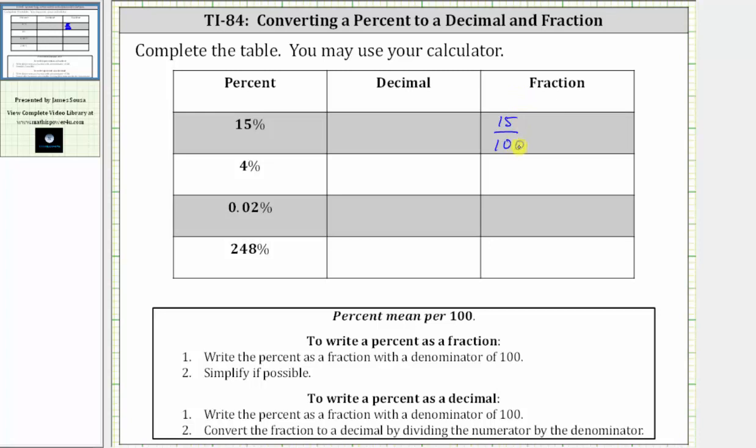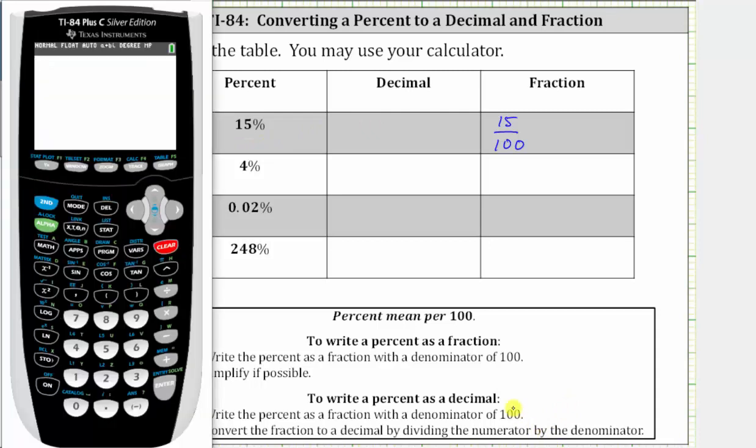And now we will simplify this on the TI-84, as well as find the decimal form of 15%. So going to the calculator, remember a fraction bar means division. We enter 15 divided by 100, enter, which gives us the decimal for 15%. 15% is equal to 0.15.